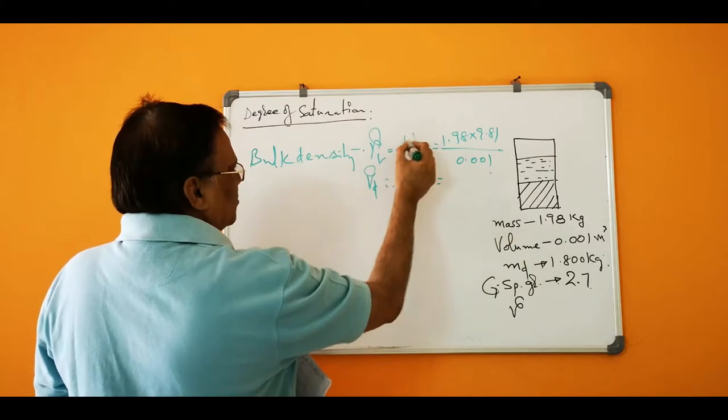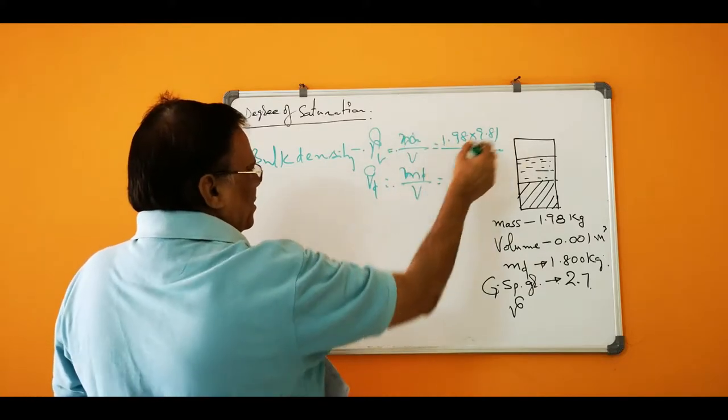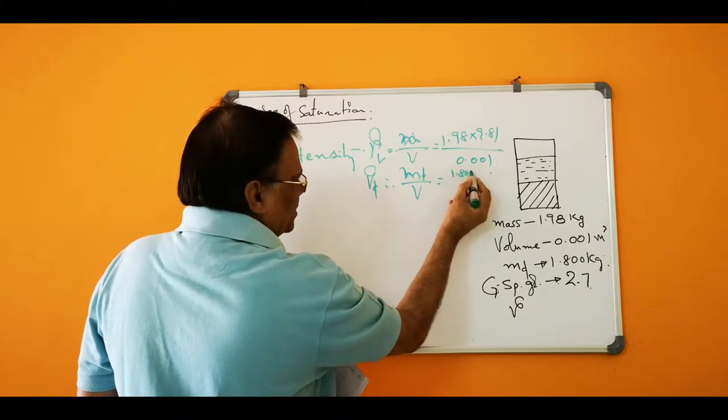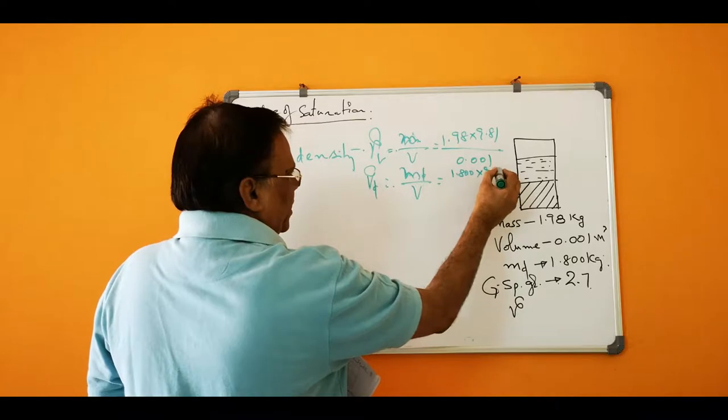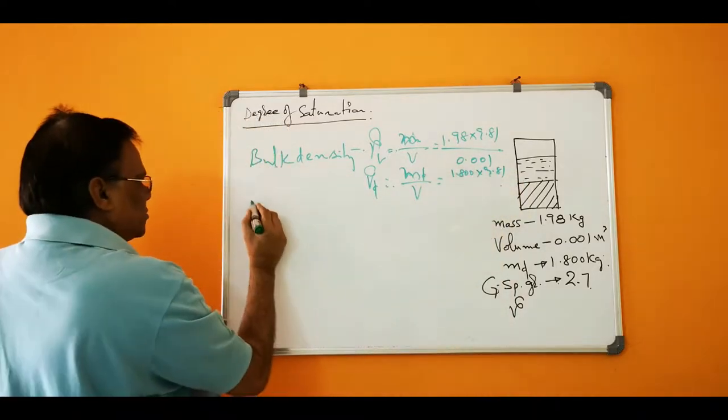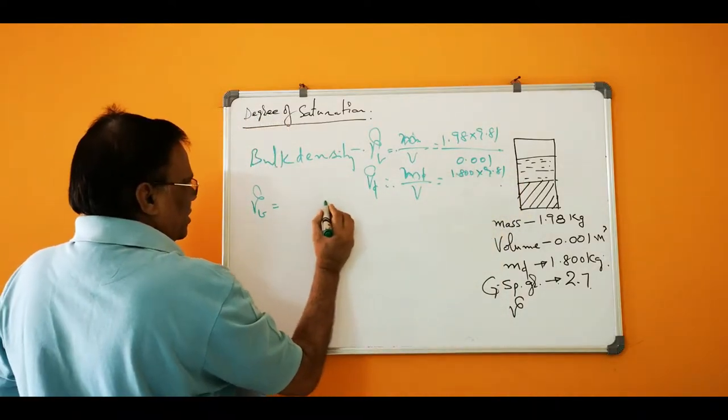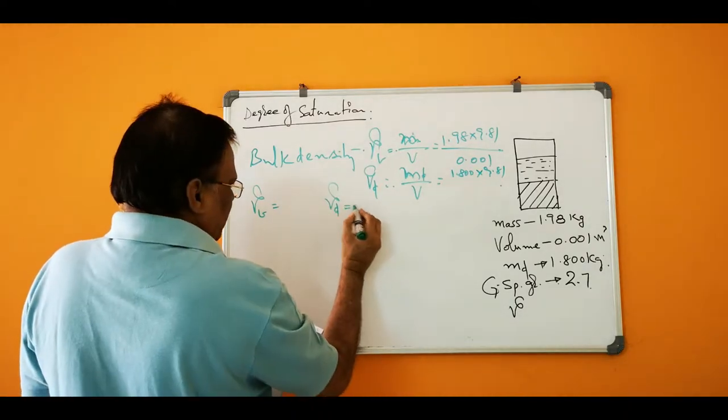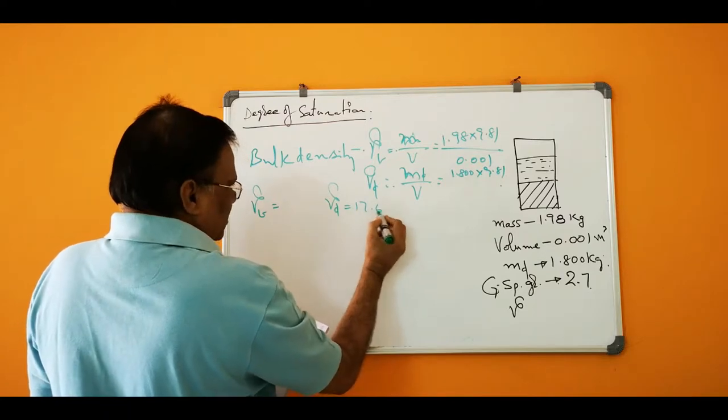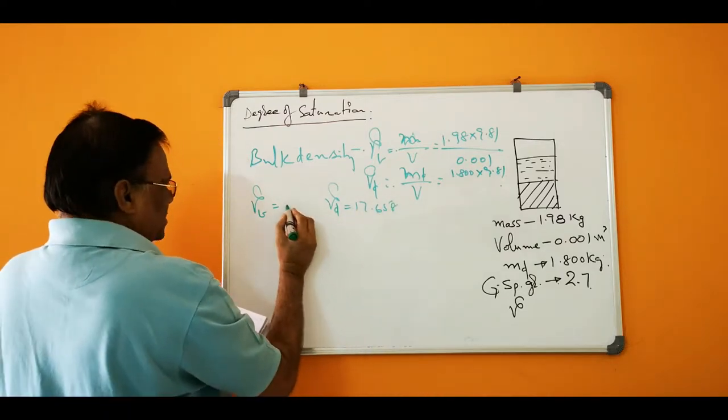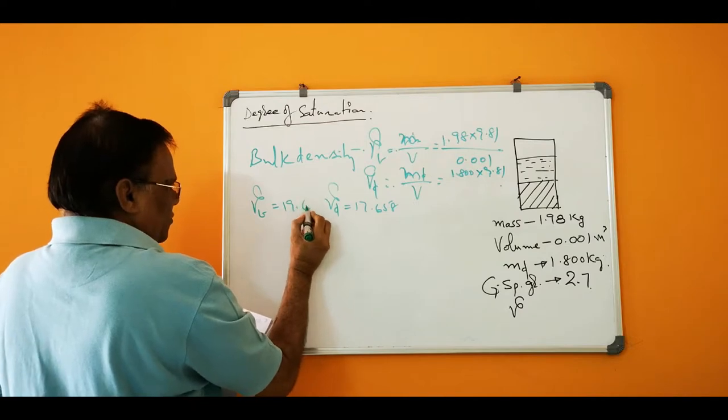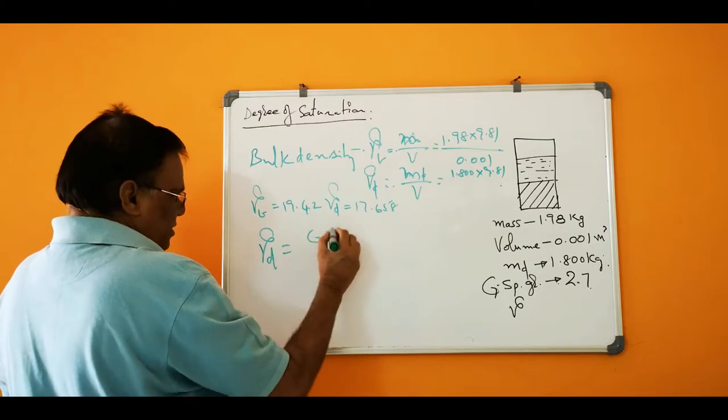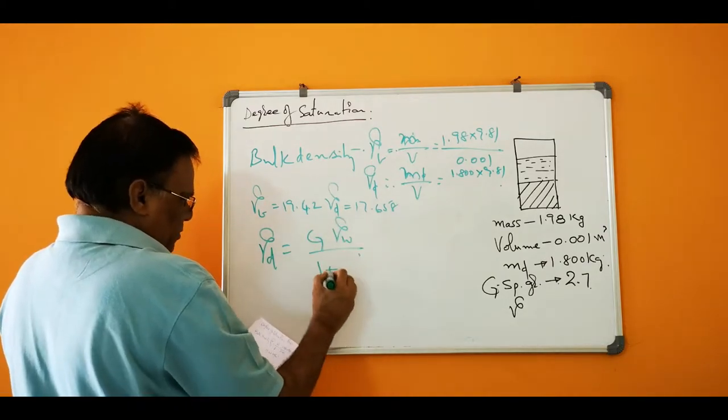So this is also 1.800 into 9.81. These two, gamma bulk and gamma dry, is coming as 17.658 and this is 19.42. So gamma D is equal to G gamma W by 1 plus E.